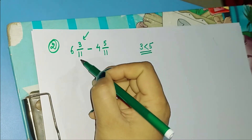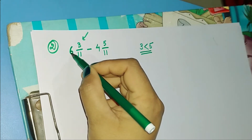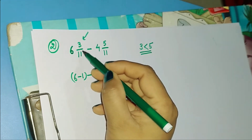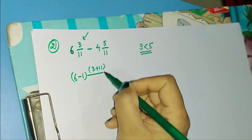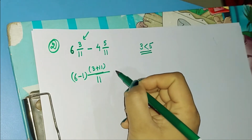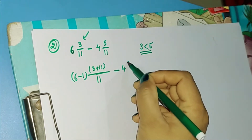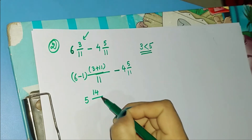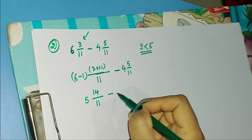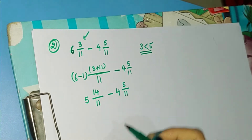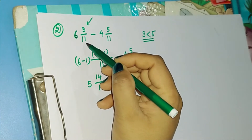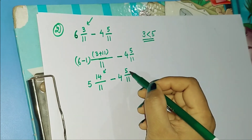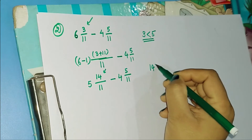So we need to make the numerator of the first fraction greater than the numerator of the second fraction. To make this numerator greater, we need to subtract 1 from the whole number. So we write 6 minus 1 here. Next, we add the denominator to the numerator, that is 3 plus 11, and keep the denominator as it is, that is 11. So 6 minus 1 is 5, and 3 plus 11 is 14. The fraction changes from 6 3/11 to 5 14/11. Now the numerator of the first fraction, 14, is greater than the numerator of the second fraction, 5.